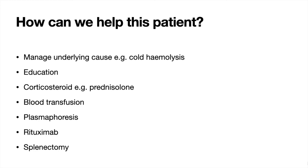We can also consider giving the patient supportive blood transfusions, since they may be anaemic. By giving blood transfusions we can manage their symptoms of tiredness, breathlessness, tinnitus, arrhythmias, and the other various symptoms associated with anaemia. We can also do something called plasmapheresis — since autoimmune hemolytic anaemia involves antibodies targeted against red blood cells, machines can be used to try and remove those antibodies, hopefully resulting in less hemolysis.